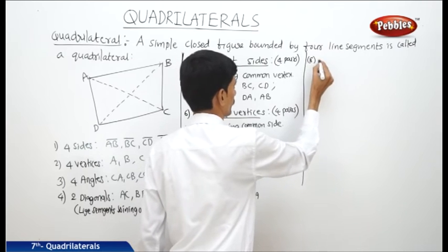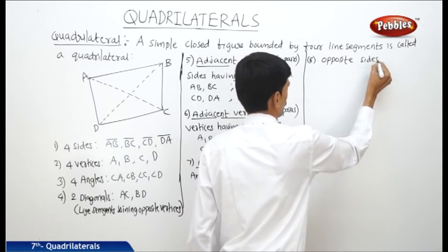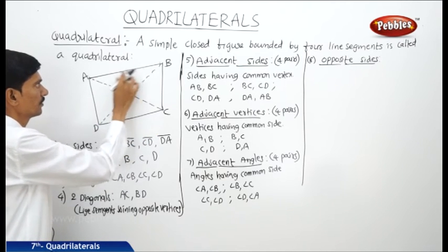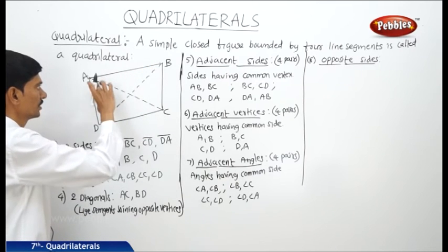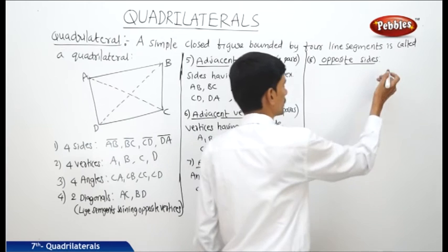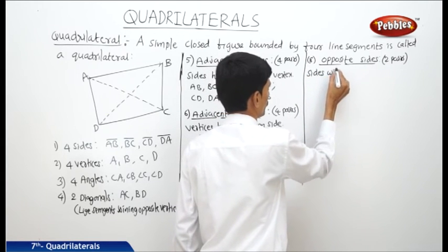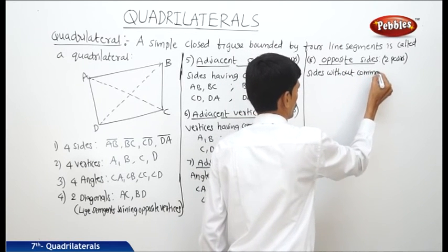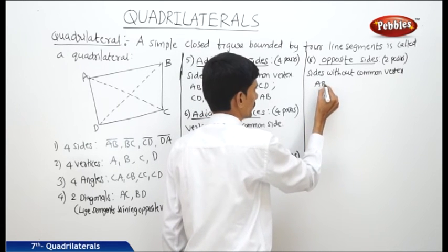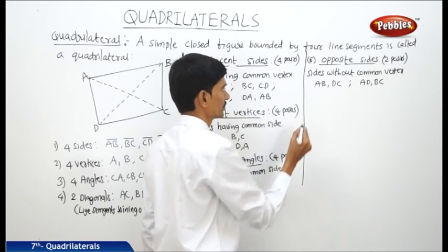Now let us write the opposite sides. Opposite sides means the two sides without a common vertex are known as the opposite sides. So AB and DC are opposite sides, and BC and AD are also opposite sides. There are two pairs of opposite sides.